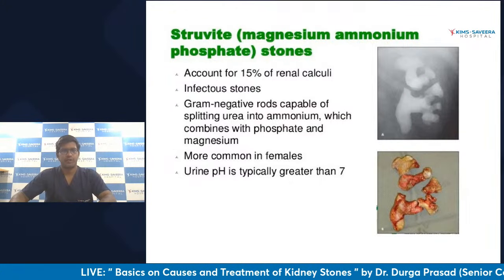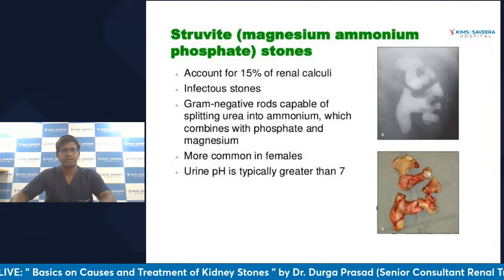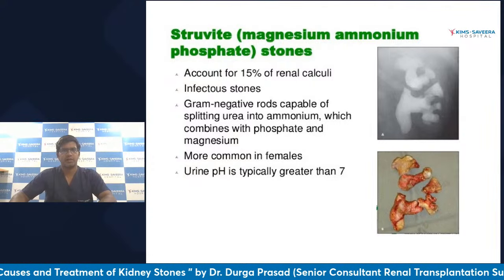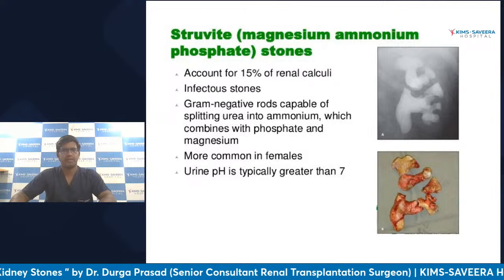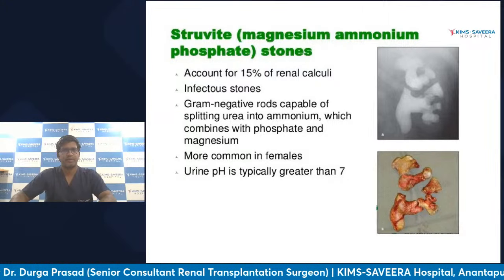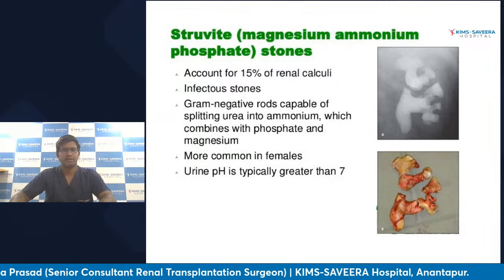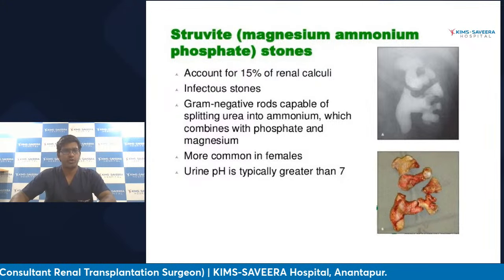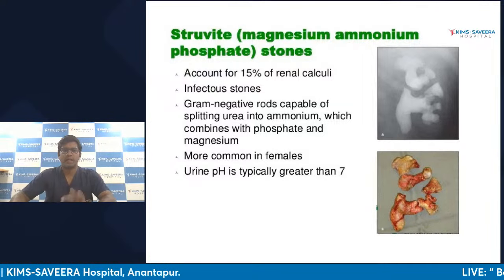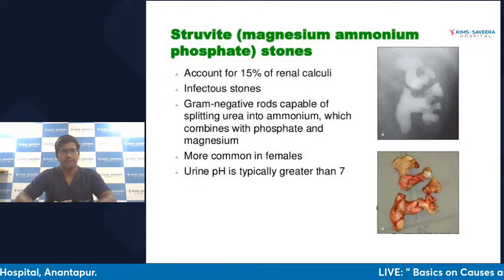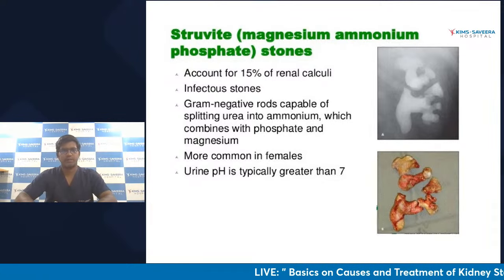Next are struvite stones. As you can see here, this is the kidney and this stone is entirely filling it — a staghorn or complete kidney stone. About 15% of stones are struvite stones, mostly due to urinary infections. These are most common in females, because women are more prone to urinary infections and therefore have higher chances of developing struvite stones.